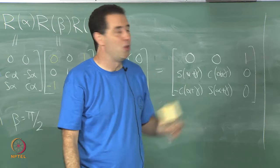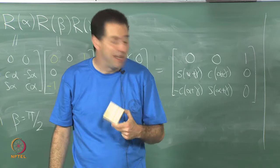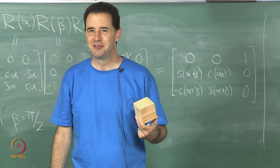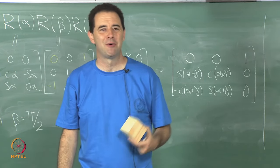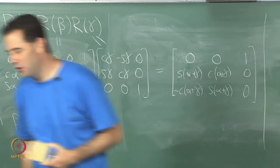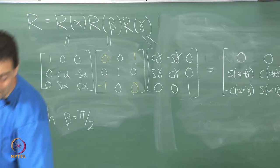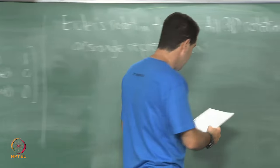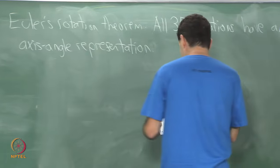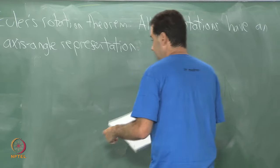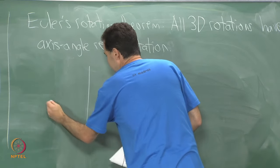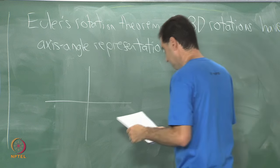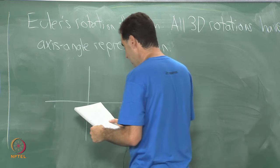That is Euler's observation — interestingly, that is what lets you get away from Euler angles and into a better representation. Euler's name is all over mathematics, but in this case the representation theorem establishes this very important observation about orientation.